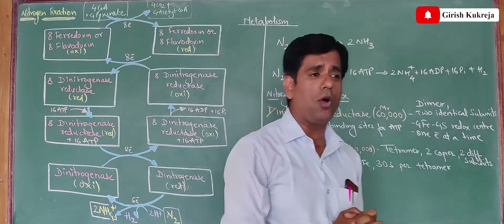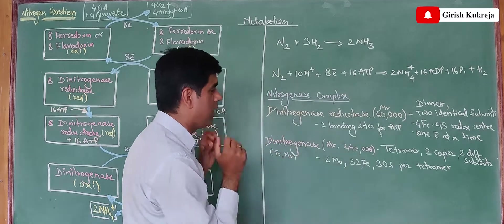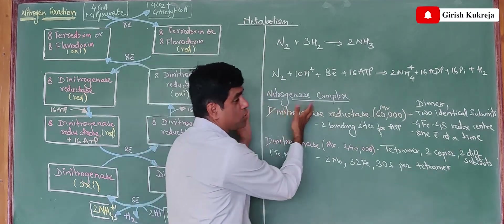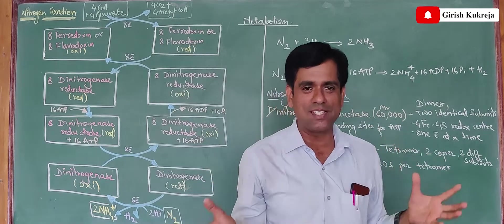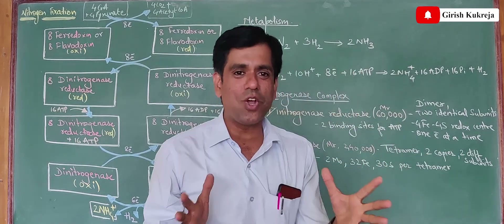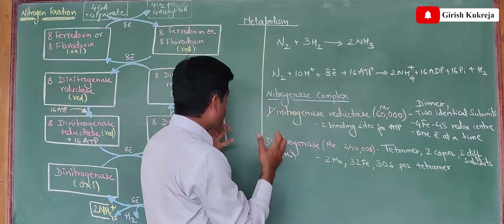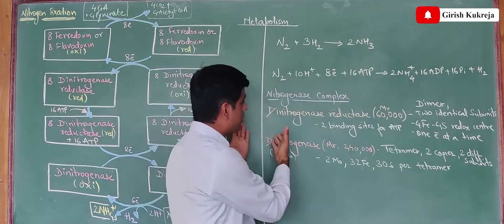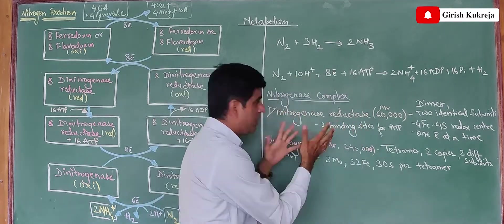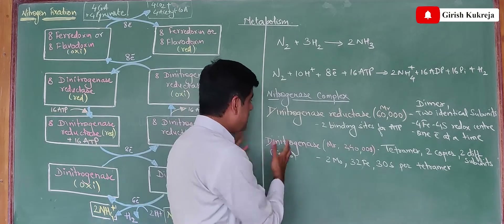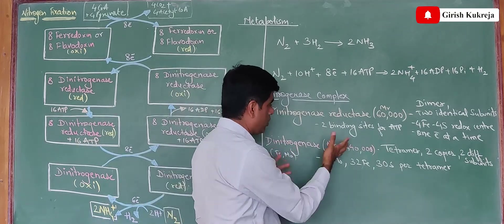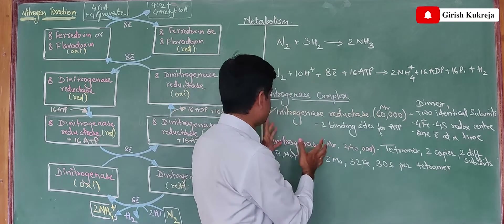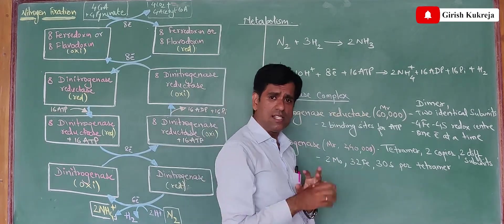How do bacteria accomplish this? They accomplish this with the help of a complex enzyme which we call the nitrogenase complex. The nitrogenase complex has two components: it has a dinitrogenase reductase with a molecular weight of around 60,000, and a dinitrogenase component which has a molecular weight of around 240,000. The dinitrogenase reductase is a dimer.